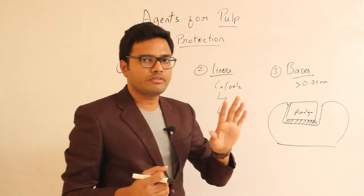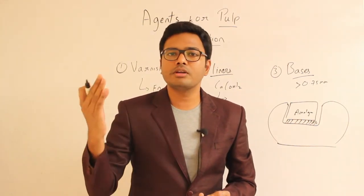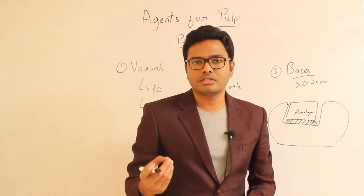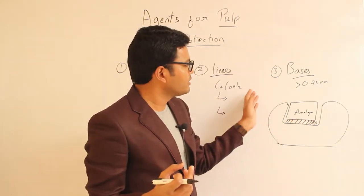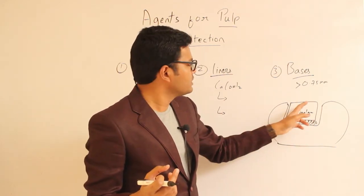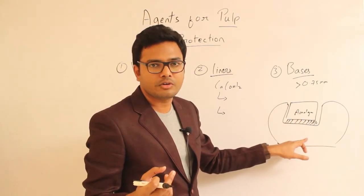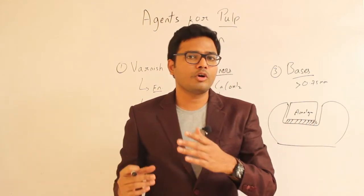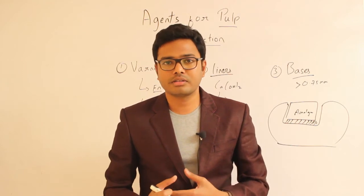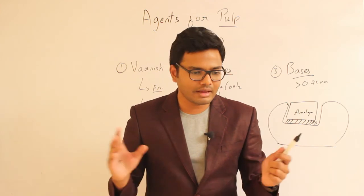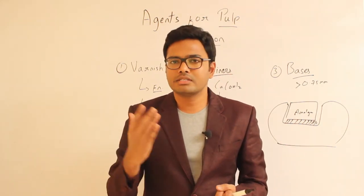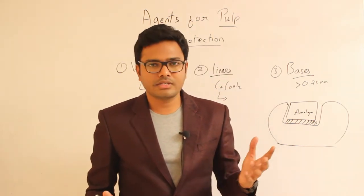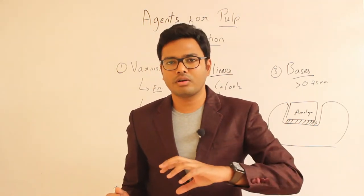The main important functions of a base are to provide mechanical support and also to prevent the entry of thermal stimuli into the pulp. While restoring a cavity with amalgam — which is an alloy — when a patient takes hot coffee or ice cream, thermal changes are easily conducted into the pulp, as amalgam is a strong conductor of heat. By placing a base of appropriate thickness, we can prevent entry of thermal stimuli into the pulp. Apart from that, a base also helps in preventing the entry of galvanic currents and various harmful chemical stimuli into the pulp.